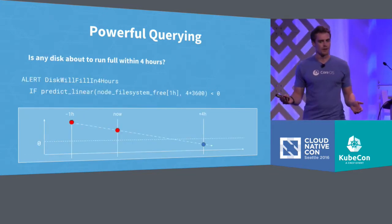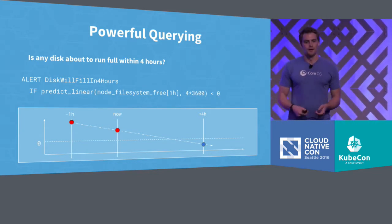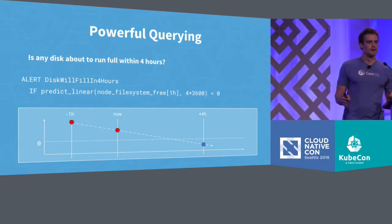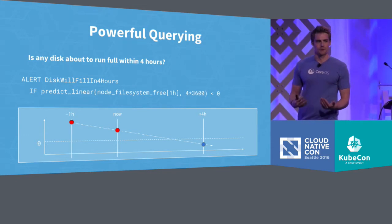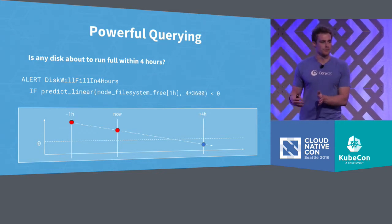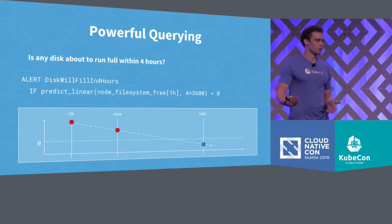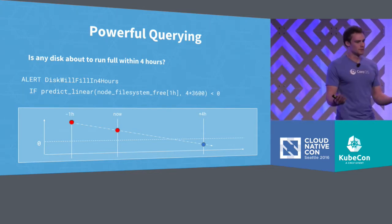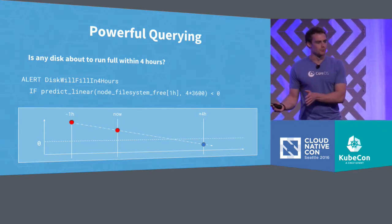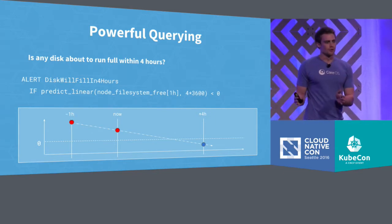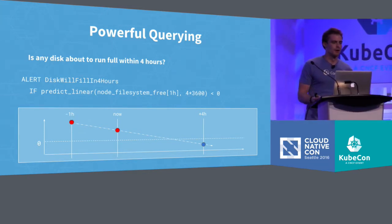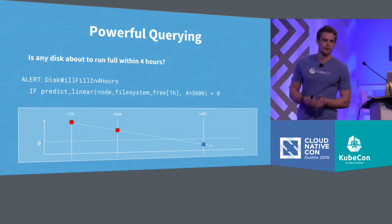Another example: let's say we have a metric which tells us how many free bytes there are on any particular hard drive on any particular node in your cluster. You can look at the last hour of data and then make a linear prediction — if the current behavior continues, what will happen in four hours? That allows us to check if the number of free bytes in four hours will be less than zero, meaning the disk will be full. We can wrap this into an alerting rule, and Prometheus will notify us as soon as this condition is true, giving us about four hours to react and fix the cause or extend the hard drive size. And this is one single alerting rule which covers every single hard drive in your entire infrastructure.